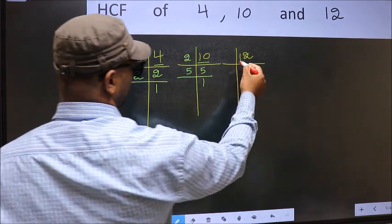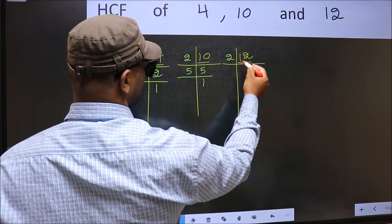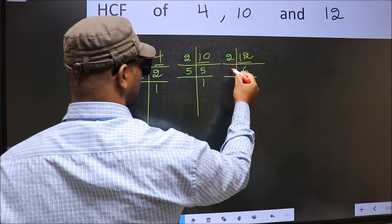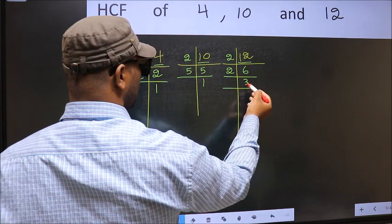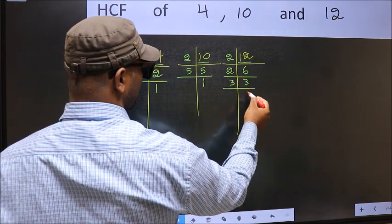Now the other number 12. 12 is 2, 6, 12. 6 is 2, 3 is 6. Now 3, 3 is a prime number so 3, 1 is 3.